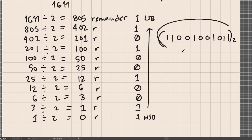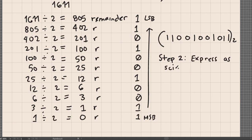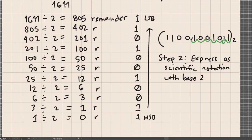Step 2: express this as scientific notation with base 2. Counting the number of places to position the decimal point after the leading 1 — that is 10 places — we get 1.1001010011 times 2 raised to 10.